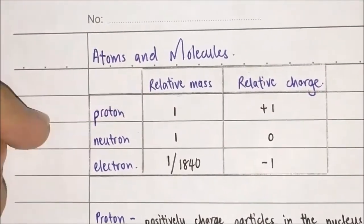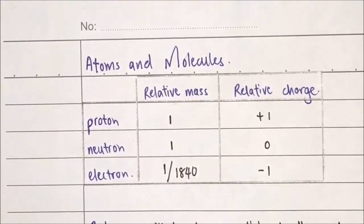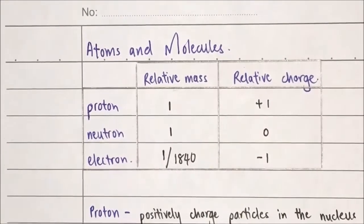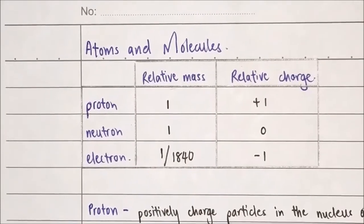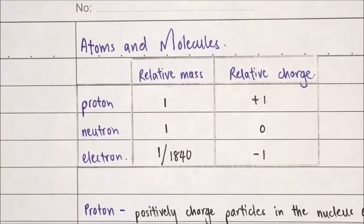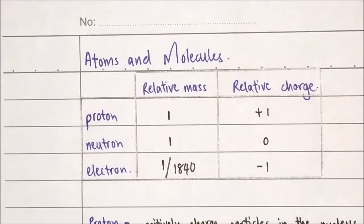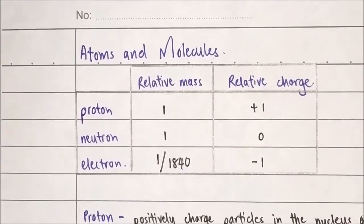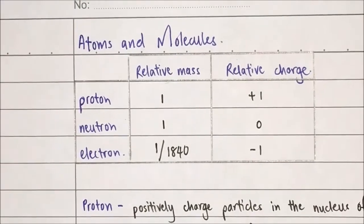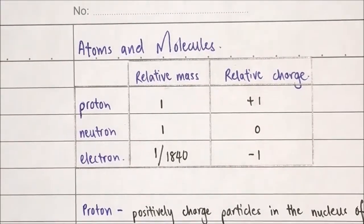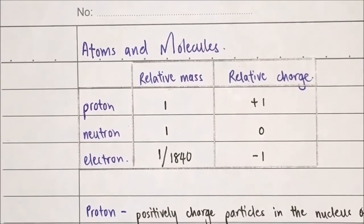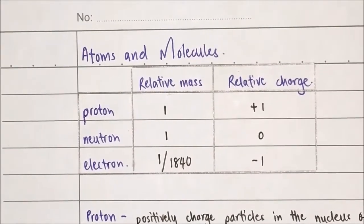The relative mass for the Proton is 1, same goes with the Neutron. But for the Electron, the Electron is the lightest particle in an atom. The relative mass for the Electron is 1 over 1840, it's likely to be 0. For the relative charge, the Proton has a positive 1, the Neutron is 0, and the relative charge for the Electron is negative 1.